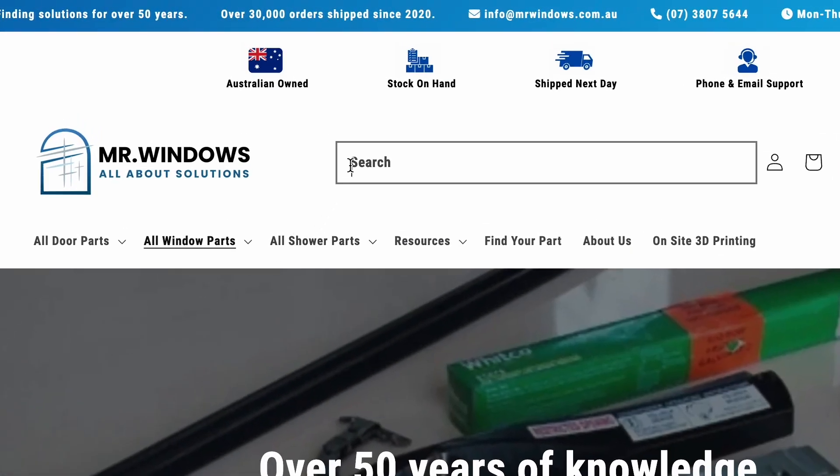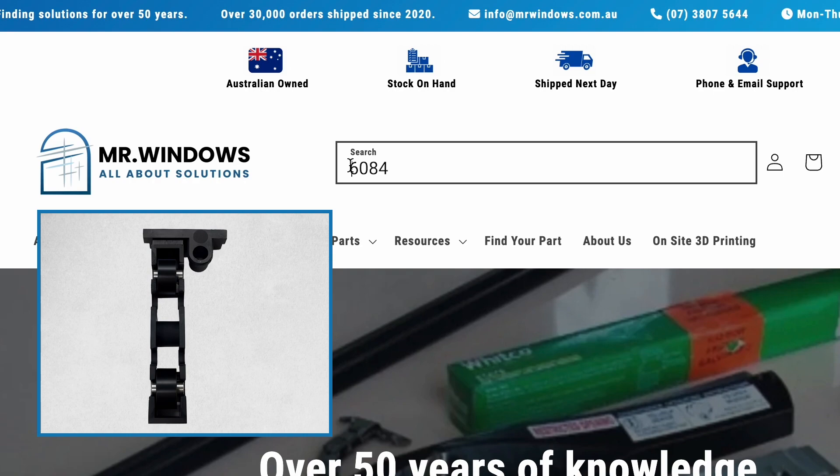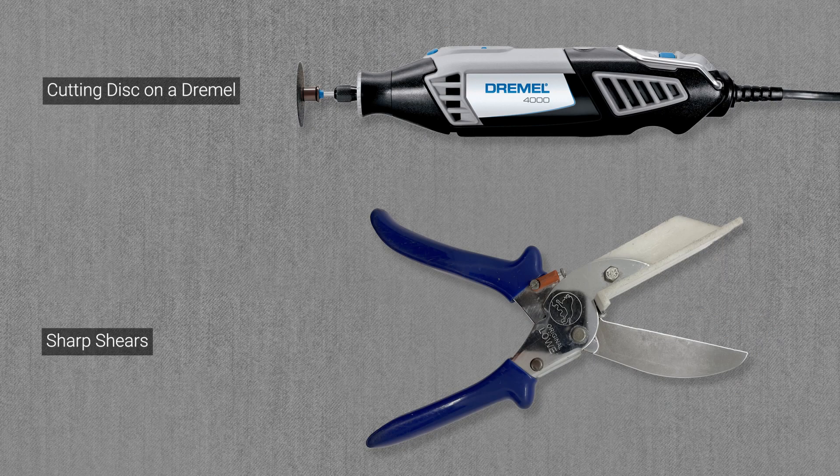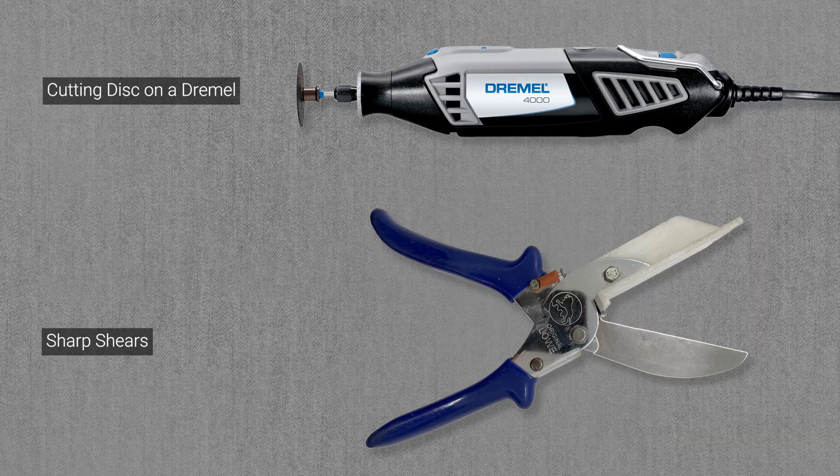Looking for these rollers? Search SKU 6084 on the Mr. Windows website. To undertake this task, you will require a set of sharp shears or a cutting disc on a Dremel.